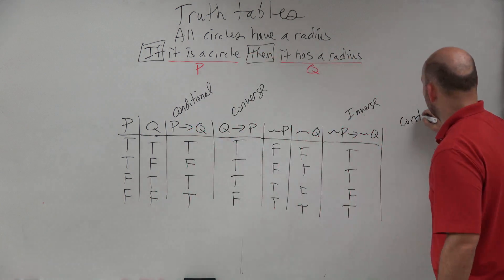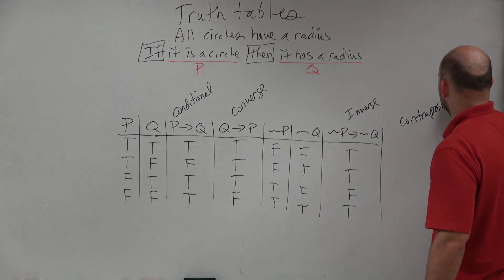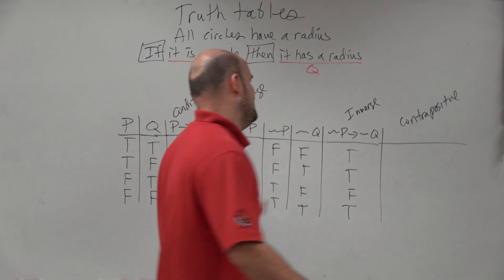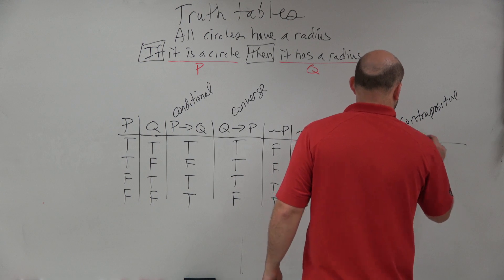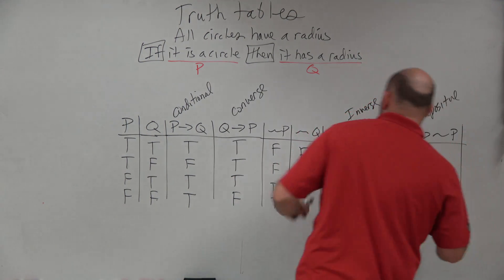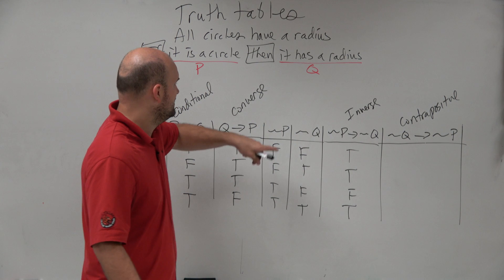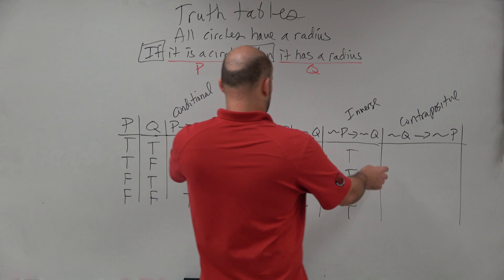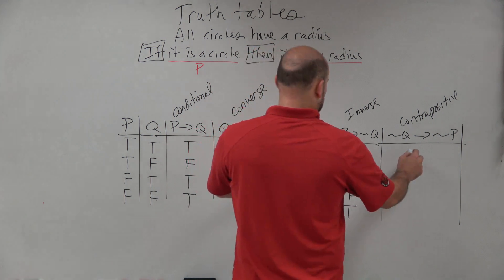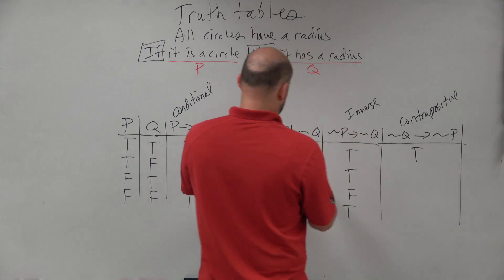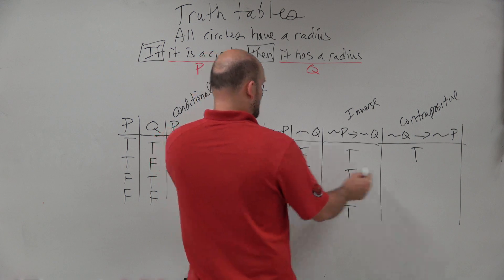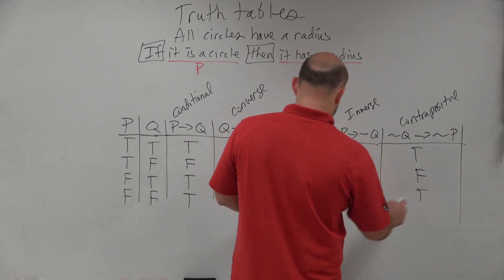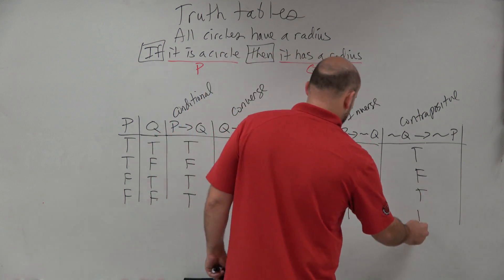The last one is the contrapositive. The contrapositive is if not q, then not p — the opposite of q to the opposite of p. So: false-false is true, true-false is false, false-true is true, and true-true is true.